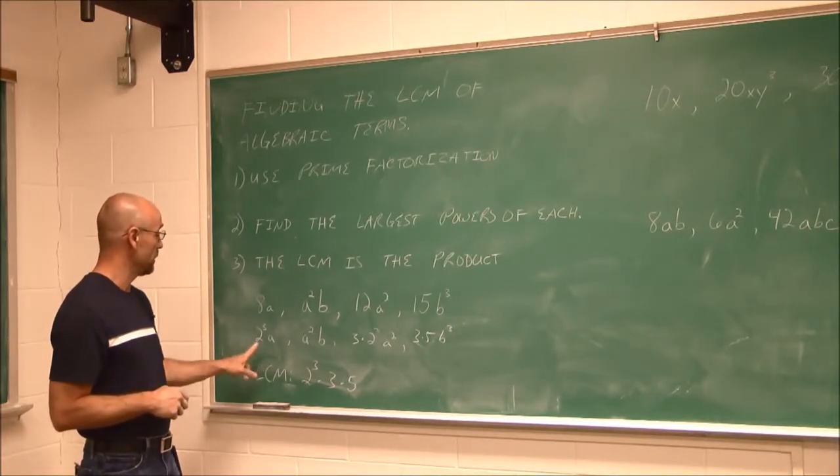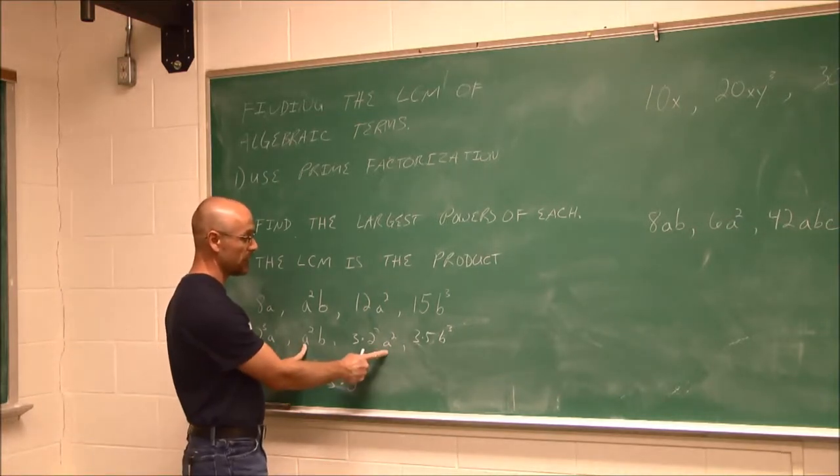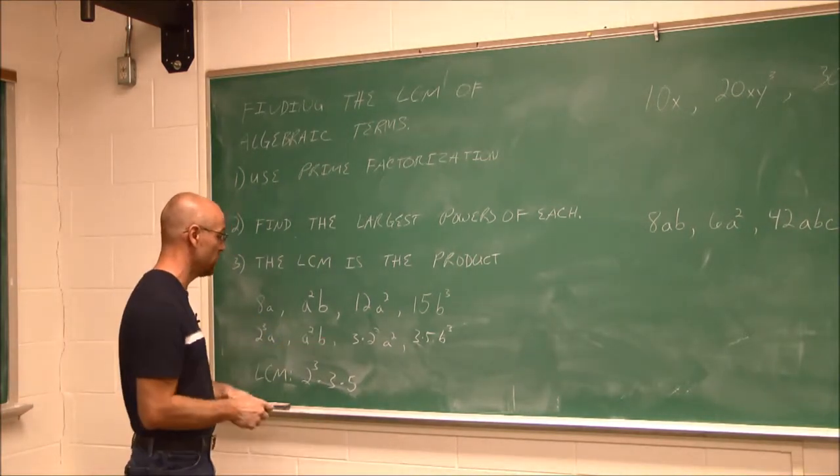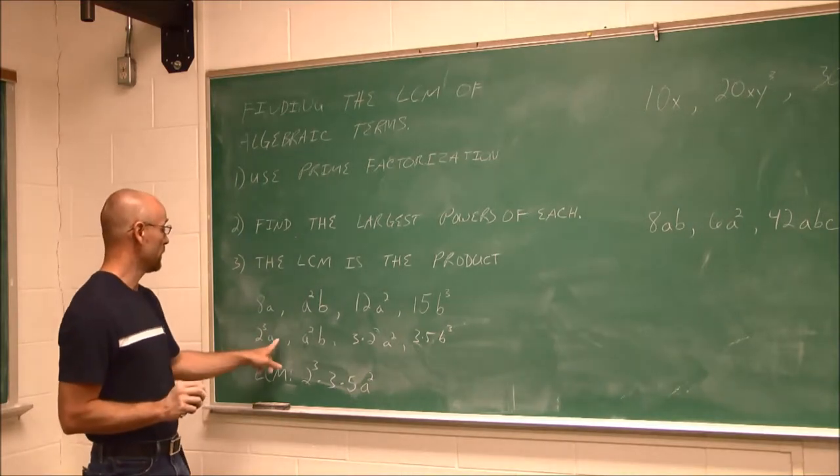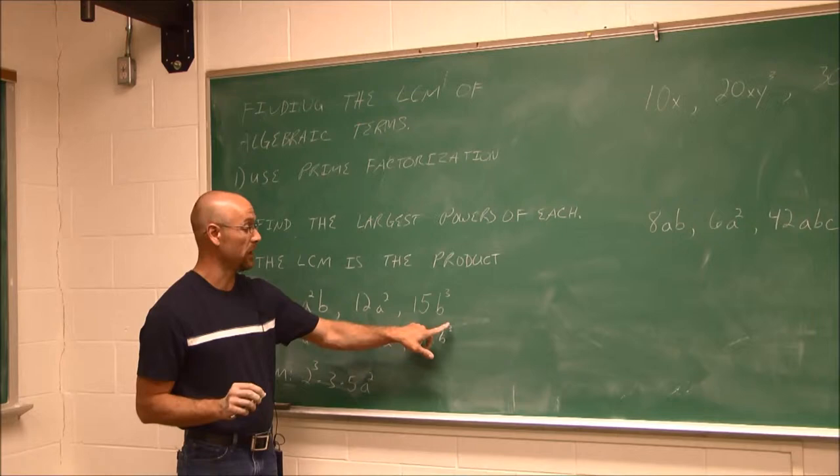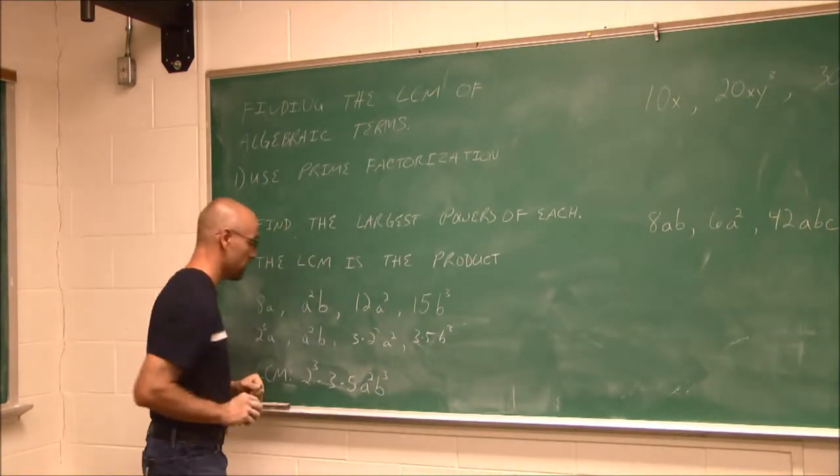Now we just look at the a's. Well, this is a to the first, this is a to the second, this is a to the second. So our highest or greatest power of a is 2, so I have to have a². If we look at these, this one has a b, this one has 3 b's, b³. 3 is greater than 1, so I have to have 3 b's cubed.